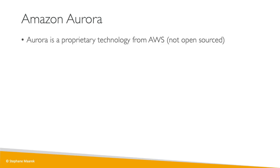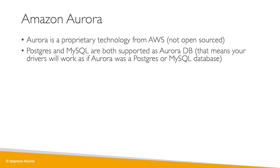Let's talk about Amazon Aurora because the exam is starting to ask a lot of questions about it. You don't need deep knowledge on it, but you need enough high-level overview to understand exactly how it works. Aurora is a proprietary technology from AWS — it's not open sourced, but it's compatible with Postgres and MySQL. Your Aurora database will have compatible drivers, so if you connect as if you were connecting to a Postgres or MySQL database, it will work.